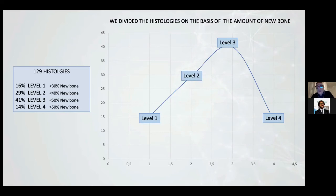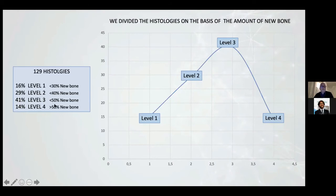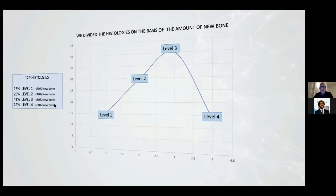At level three, we have 41% of the cases. Each level is connected to the quantity of new bone. Level one is minus 30%, level two is minus 40%, level three is minus 50%, and level four is above 50%.